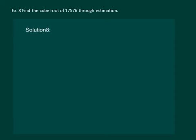Let us read the question. Find the cube root of 17,576 using estimation method. So, let us start with step 1. In step 1, we have to form groups of 3 from the 1's place. So, we have 2 groups here now.